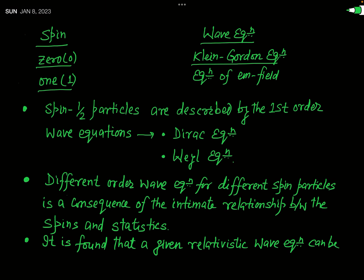If we talk about particles having half-integral spin, or spin-1/2 particles, then the Klein-Gordon equation is not applicable. Any particle having spin 1/2 is described by a first-order wave equation. That first-order wave equation is called the Dirac equation or the Weyl equation — both are first-order wave equations applicable to half-spin particles.